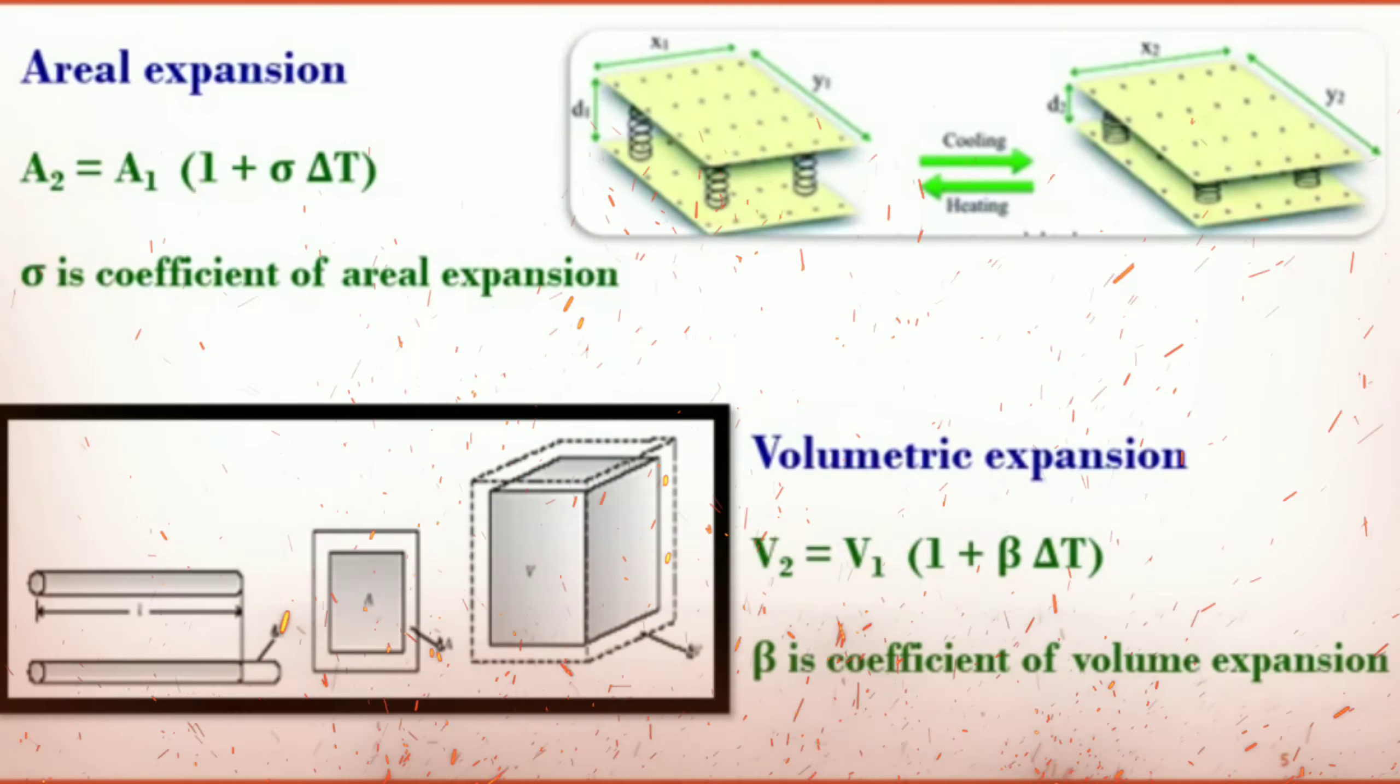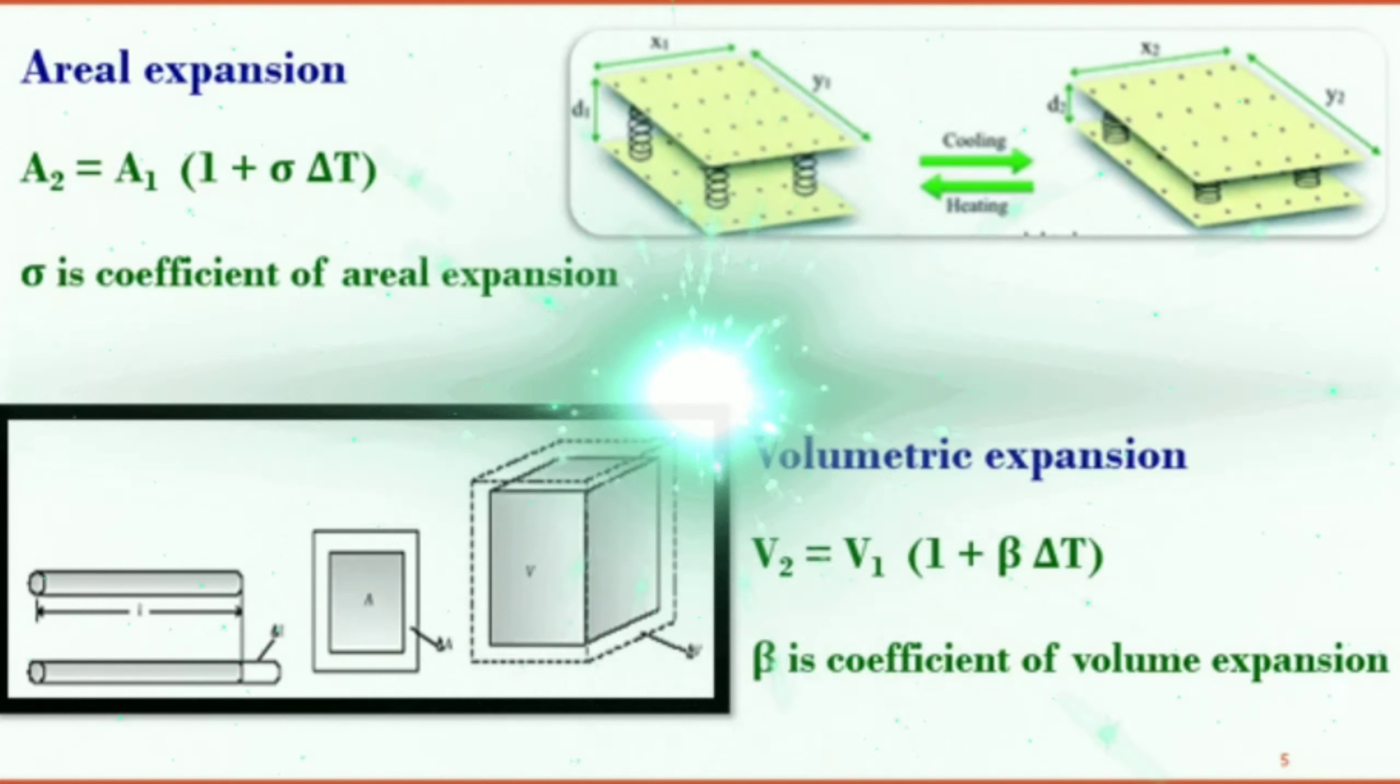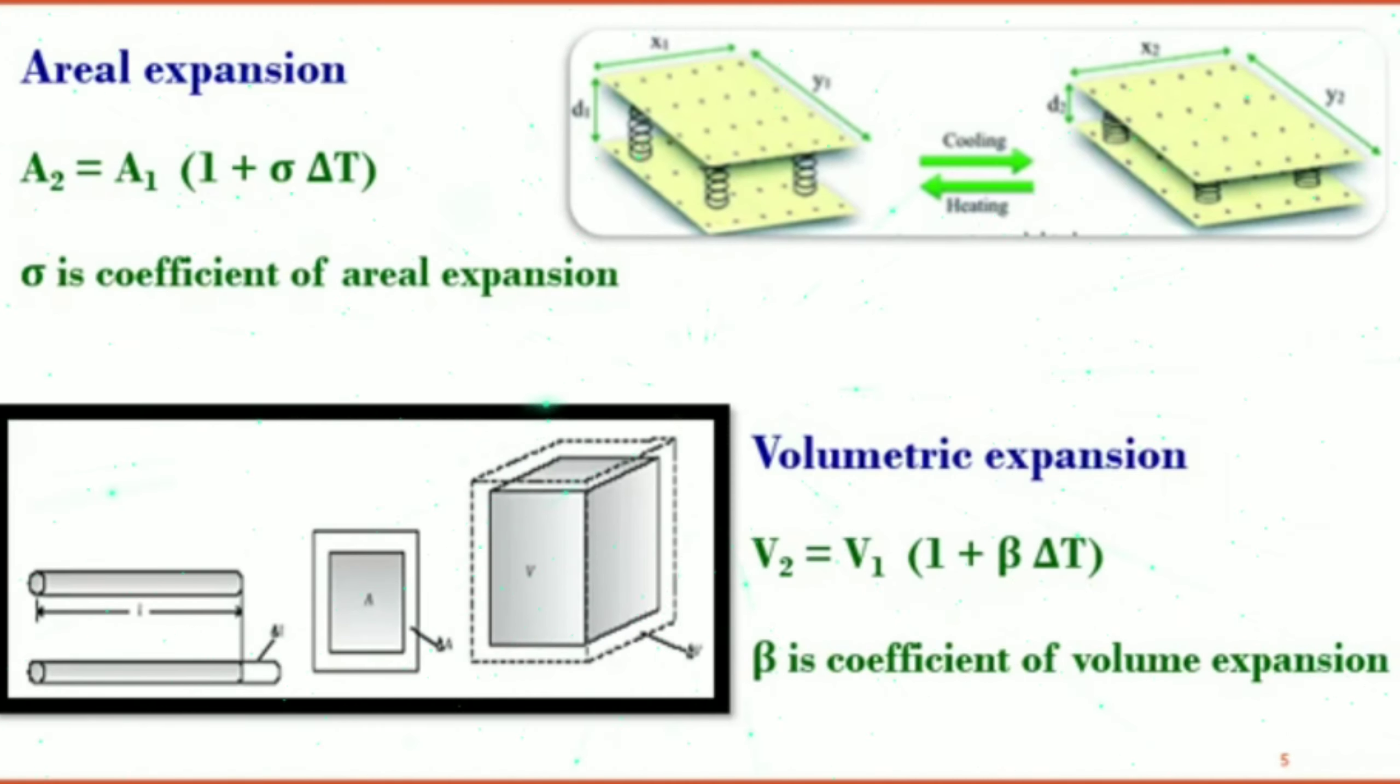Let us move towards expansion of liquids. A liquid does not have a definite shape but it has a definite volume. So we can define a volumetric expansion coefficient for a liquid as follows: V2 equals V1 times 1 plus beta delta T. Here delta T is the change in temperature and V1 and V2 are the initial and final volumes of the liquid.